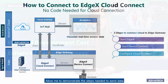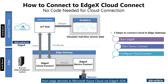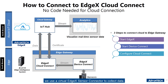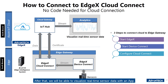Allow me to demonstrate the steps needed to send data from edge devices to Microsoft Azure Cloud via EdgeX SDK. First, at the EdgeX southbound interfaces, we use a virtual EdgeX sensor connector to collect data. This data is sent to Microsoft Azure Cloud Gateway via EdgeX Cloud Connector. After that, we will be able to visualize real-time sensor data with an app.